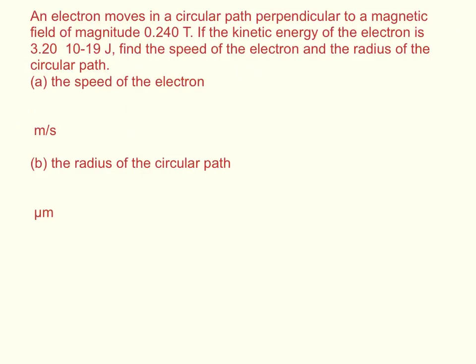An electron moves in a circular path perpendicular to a magnetic field of magnitude 0.24 tesla. If the kinetic energy of the electron is 3.2 times 10 to the negative 19th joules, find the speed of the electron and the radius of the circular path.